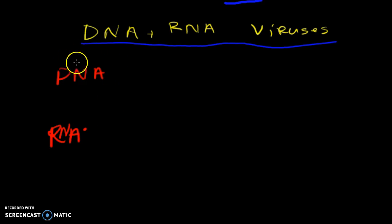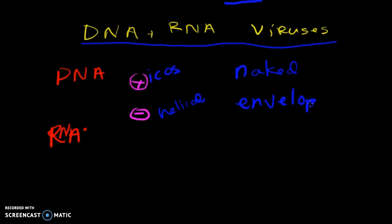We classify them first by what type of nucleic acid, and then we're going to classify them by if they are positive sense or negative sense. For our purposes, if it's a positive sense, we're going to see it also be icosahedral, and if it's a negative sense, we'll see it being helical. In addition to that, we're going to be looking at if it's naked or enveloped.